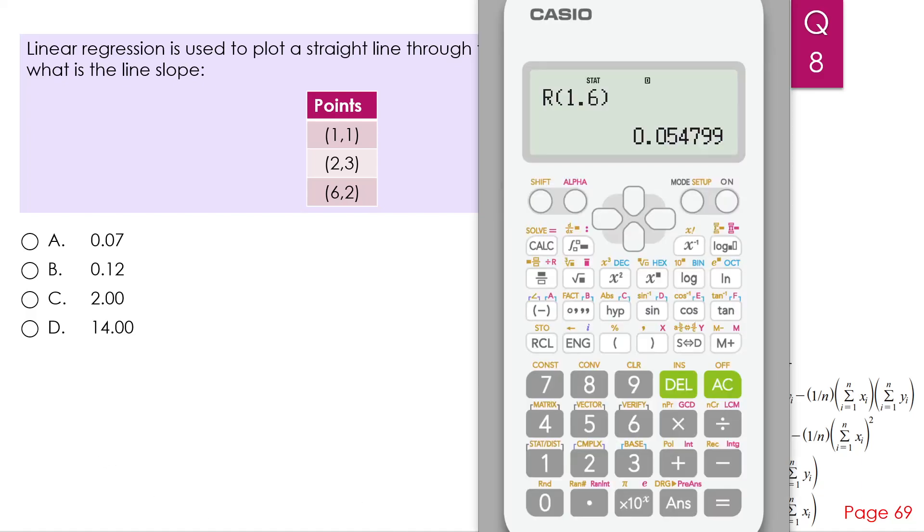But you can do that using your calculator. So basically, go to mode number three. Now you choose A plus BX. This is for linear regression.